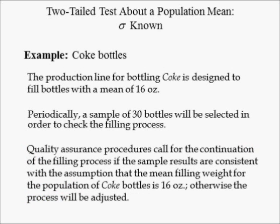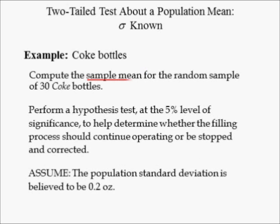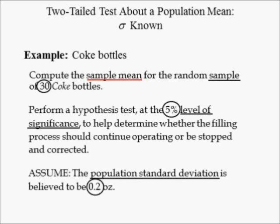In our new example, we're going to look at Coke bottle filling. The production line for Coke is designed to fill bottles with a mean of 16 ounces. Periodically, a sample of 30 bottles will be selected to check the filling process. Quality assurance procedures call for continuation of the filling process if sample results are consistent with the assumption that the mean filling weight for the population of Coke bottles is 16 ounces; otherwise, the process will be stopped and adjusted. The population standard deviation is believed to be 0.2 ounces.